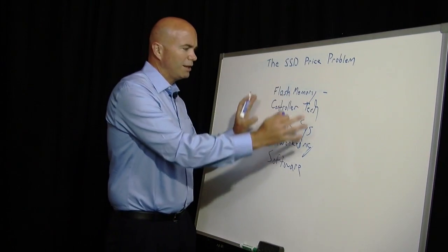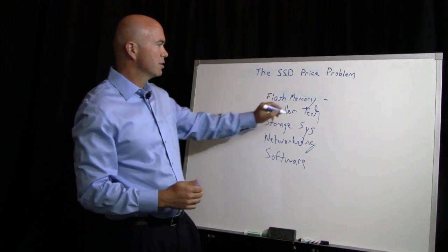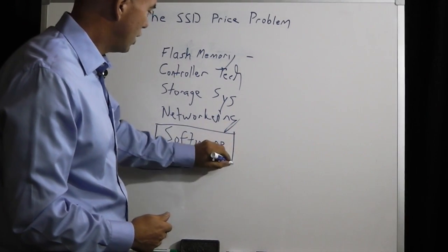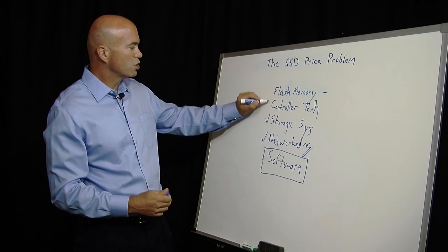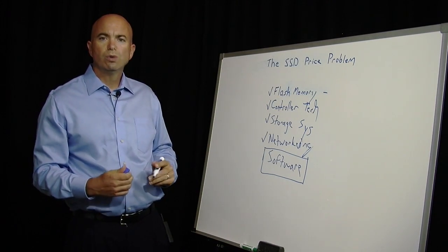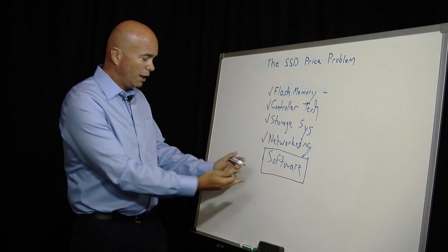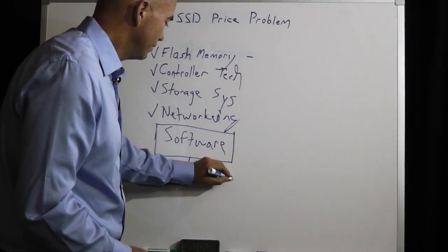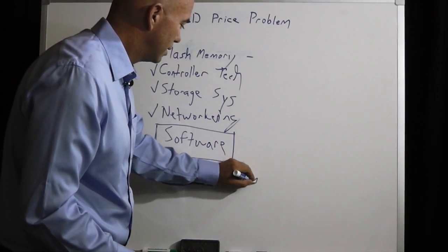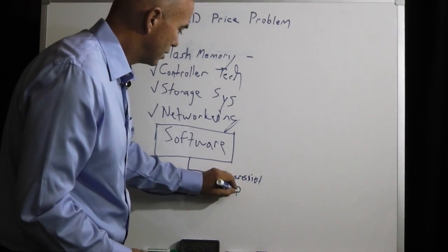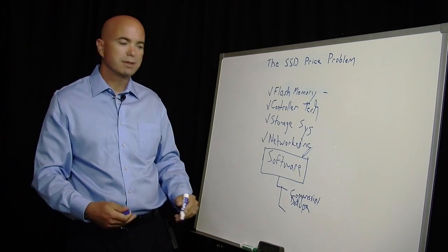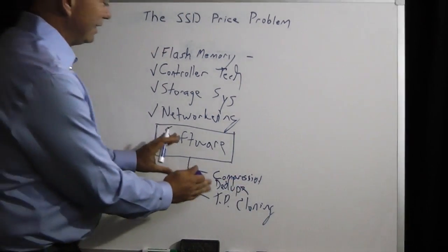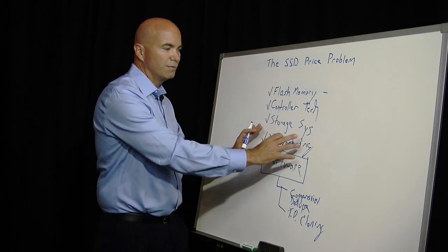So if you look at the first wave of vendors that have come into the market with solid state appliances, most of them have focused right here on the software. Then they've used sort of off-the-shelf components to deliver a system. The good news is they can get to market very quickly. And there's some great innovation in software that does help drive down price, namely compression and deduplication. They'll also do things like thin provisioning, cloning, and other features to get as much mileage as possible out of the flash investment.